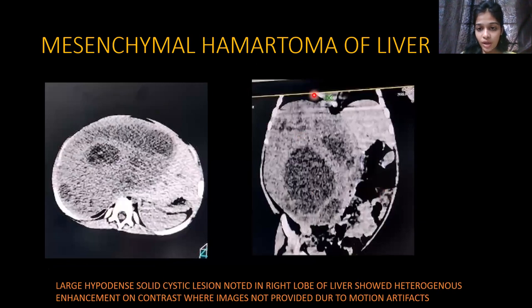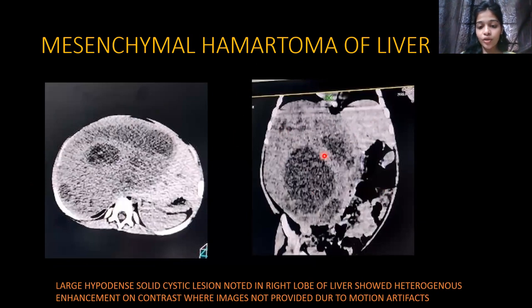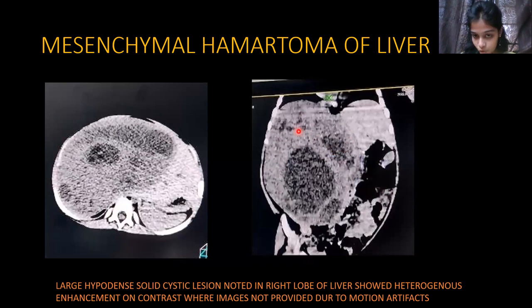Next is mesenchymal hamartoma of the liver. A very large hypodense lesion is seen compared to the liver, with cystic areas within it. On contrast, there is enhancement of the solid part of the lesion, though this is not well demonstrated here due to gross motion artefacts. This case was seen in a female.